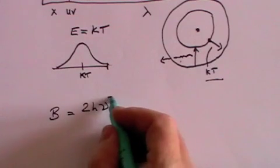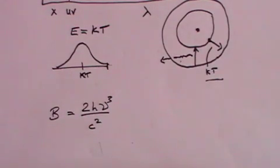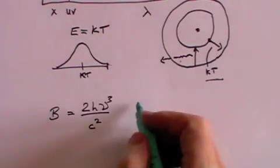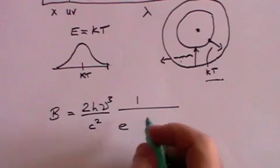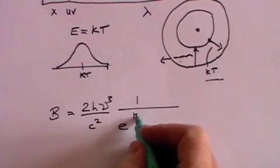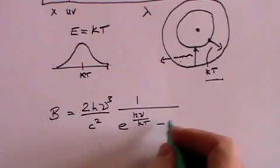which is the frequency cubed, divided by c squared, the speed of light squared, divided by 1 over e, that's the exponential, to the h nu over kT minus 1.